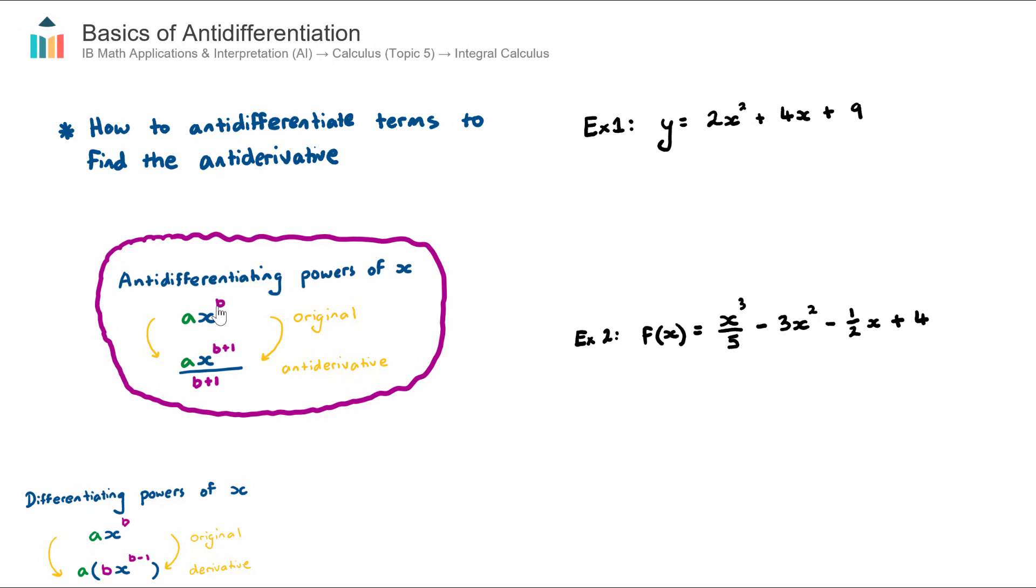So if I have ax^b, where a is just a number in front of the x term, and b is the power on the x, when we antidifferentiate, we add one to the power, and we divide by that new power. That's all it is.